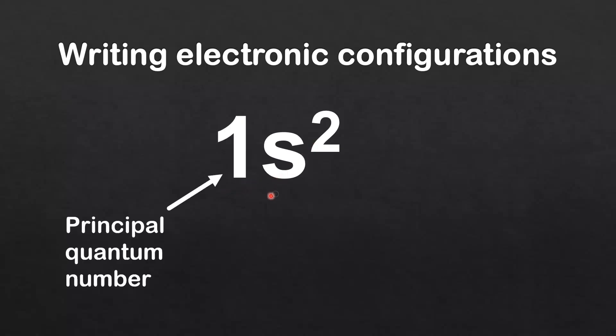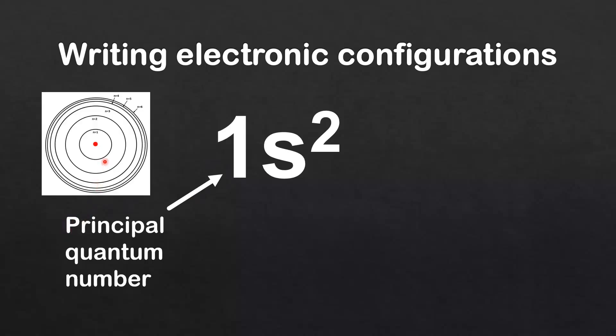Next we're going to look at writing electronic configurations. Here's an example of an electronic configuration: 1s². The number in front is the principal quantum number or the main energy level number. In this case it's energy level 1, which is n equals 1. The letter is the sublevel; it can be s, p, d, or f.